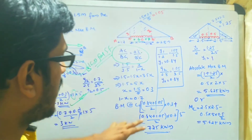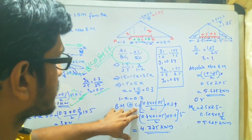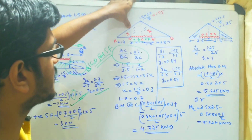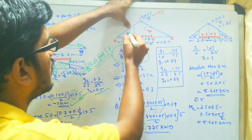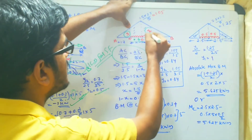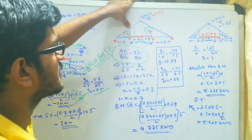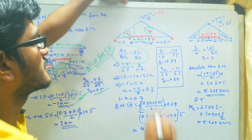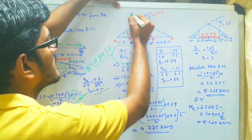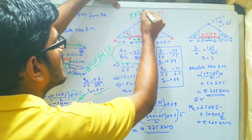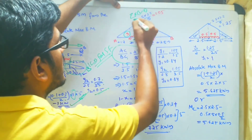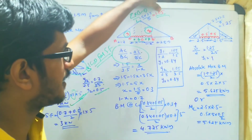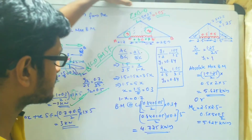After positioning the UDL, Y1 and Y2 need to be calculated. The ILD ordinate at C is found using Z multiplied by (L minus Z) divided by L: 1.5 × 3.5 / 5, giving a maximum ILD ordinate of 1.05 at point C.